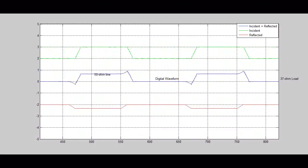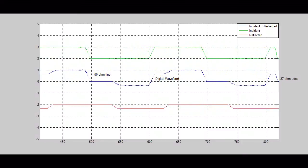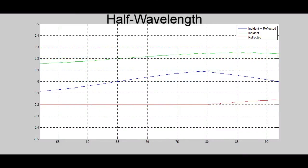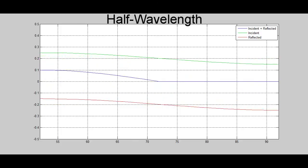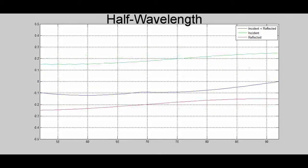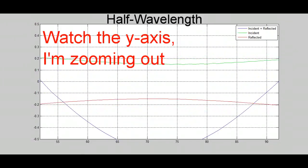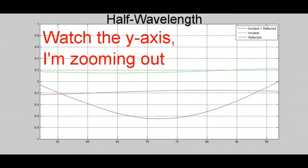In the simulation so far, the only reflection has been at the load. However, things get more complicated when there's a mismatch of the source to the left. This mismatch is only present on the blue voltage sum line. The green incident waveform is only the first driven incident field, and the red reflected wave is the first bounce.